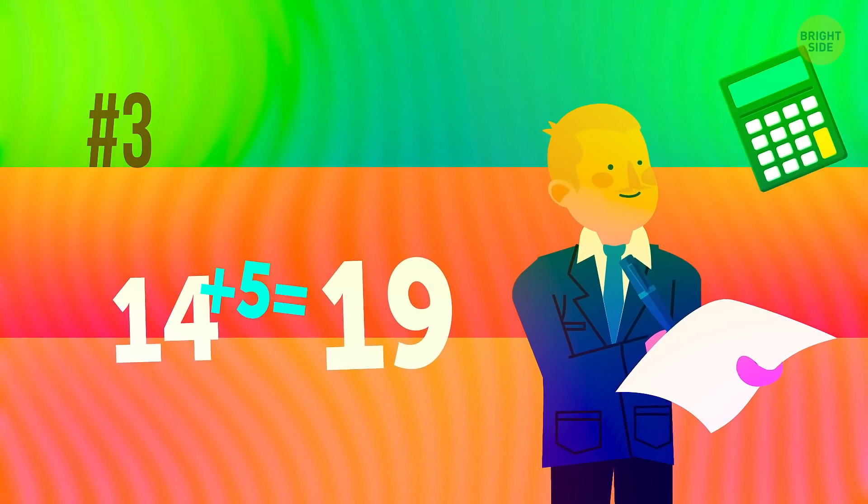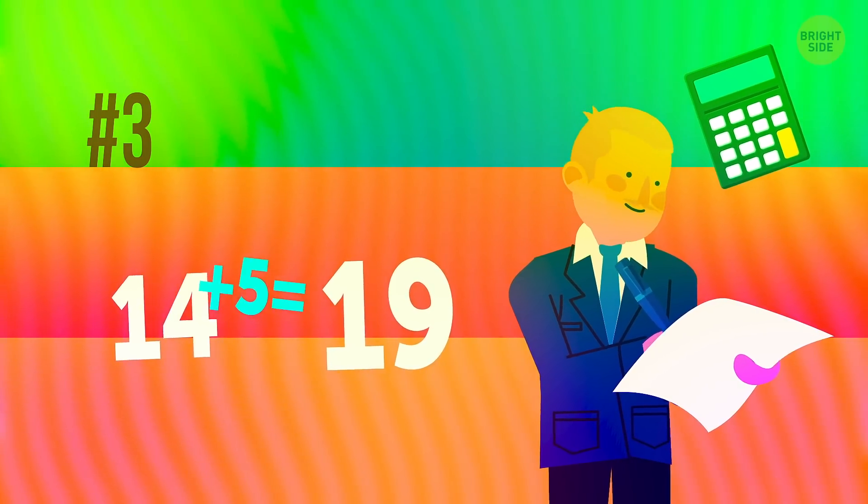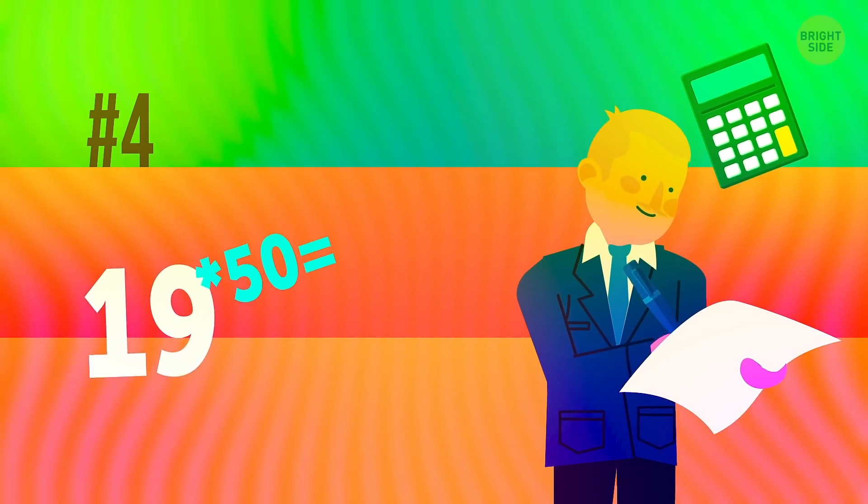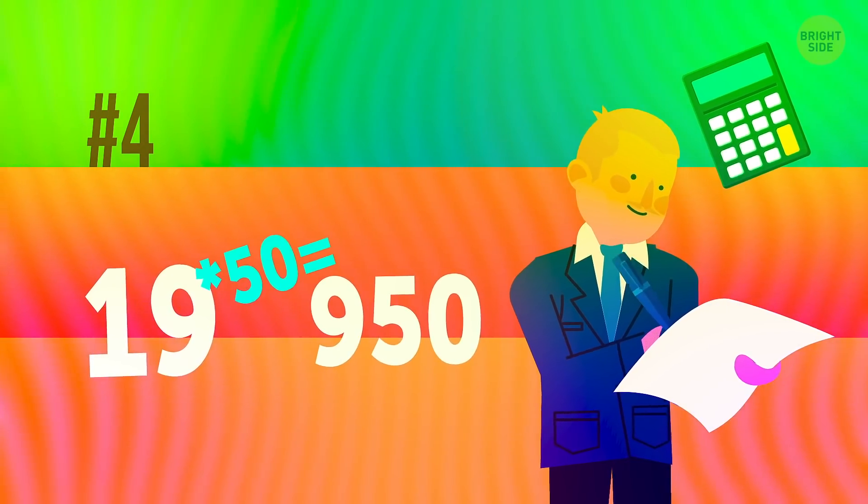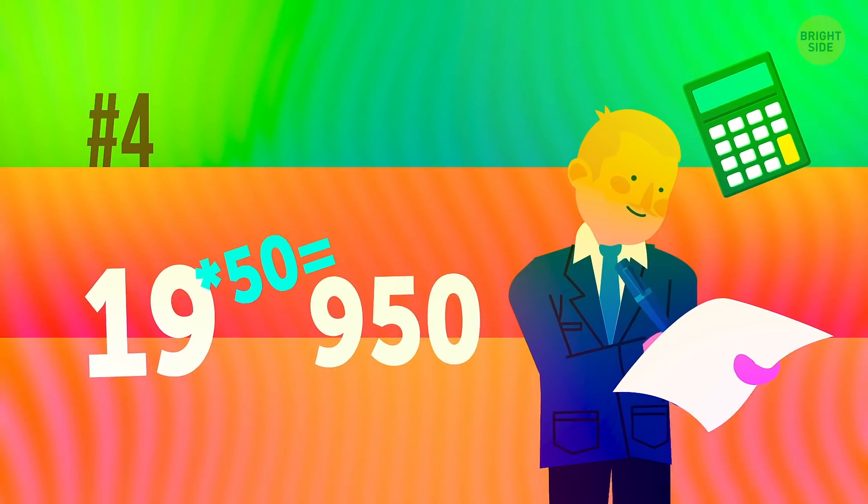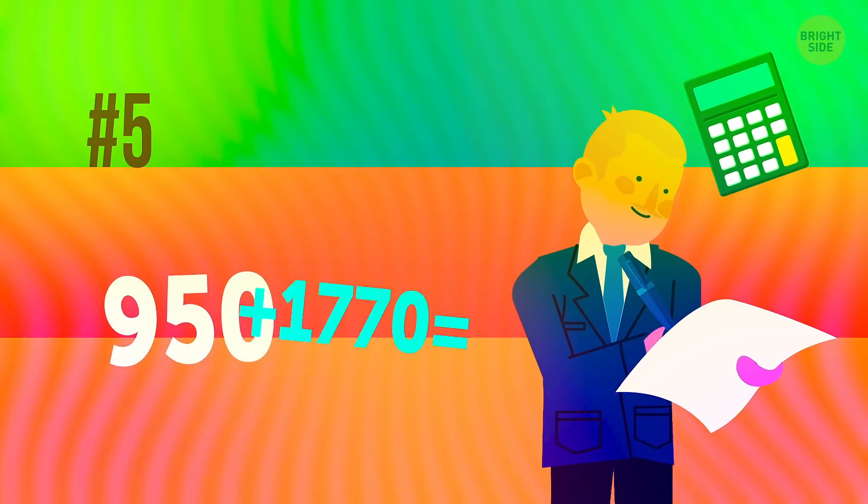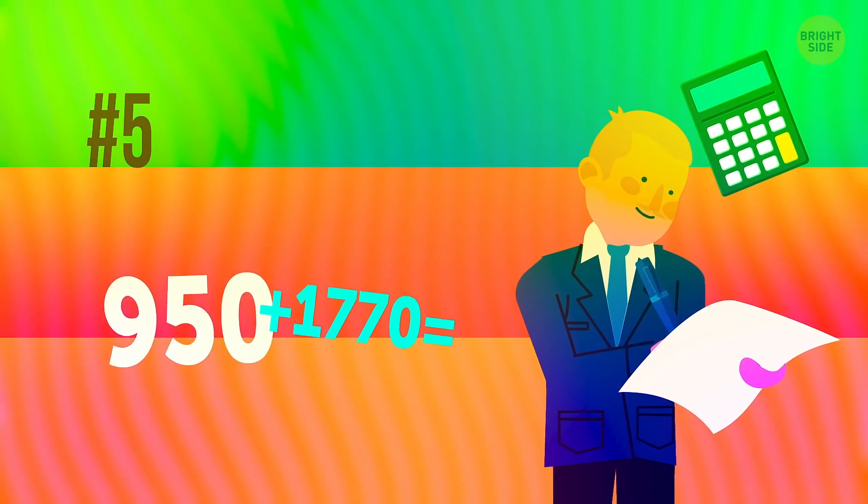Give me a sec. I'll just grab my calculator. Here we go. 19 times 50 equals 950. I've already had my birthday party this year. This means I need to add 1,770 to 950.